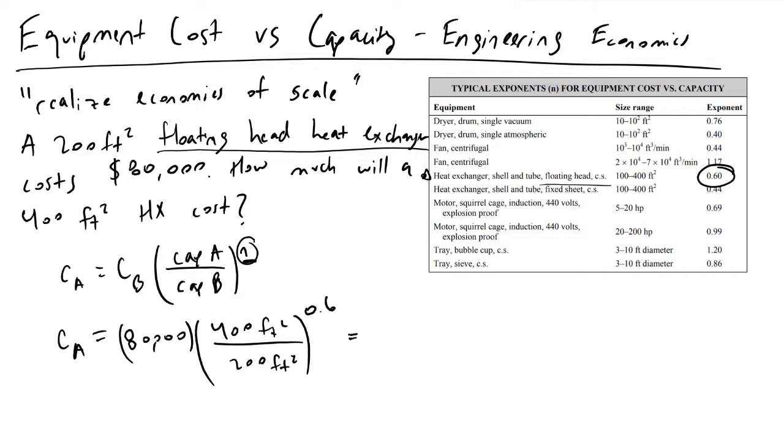And it's just a matter of plugging and chugging. So what we get out of this is that this cost will be equivalent to $121,000 based on the cost to install our 200 square foot, $80,000 heat exchanger.